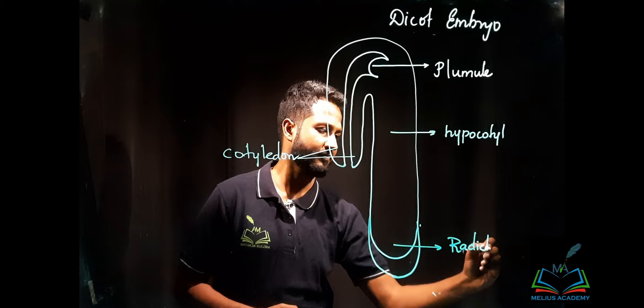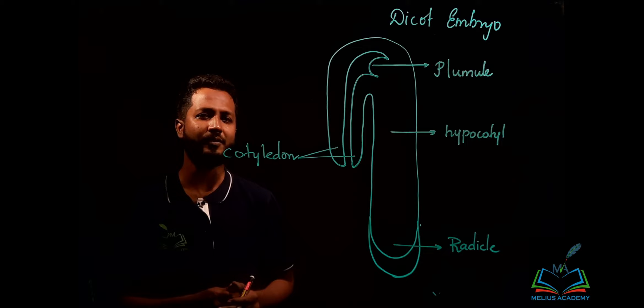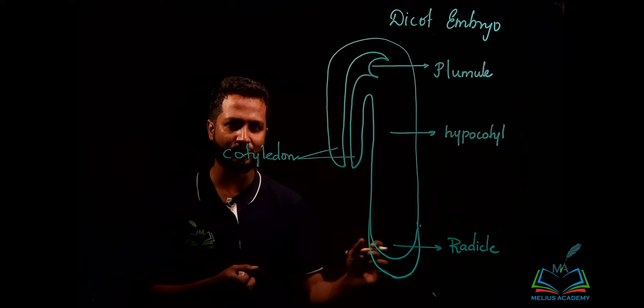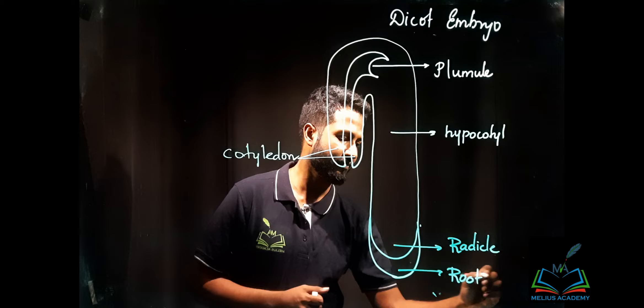The root, since it is growing within the soil, there are chances that because of some sharp objects, these tissues can be destroyed. To protect them, there is a cap called the root cap. This is a simple diagram to be drawn in examinations.